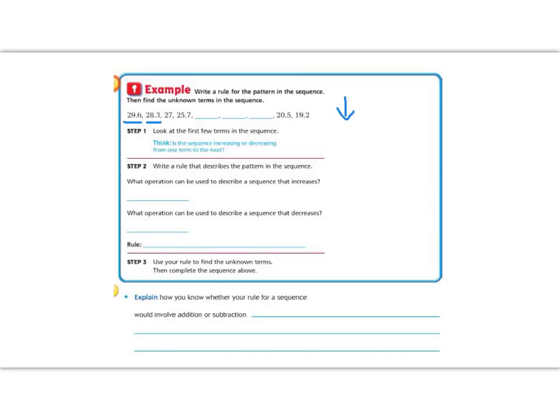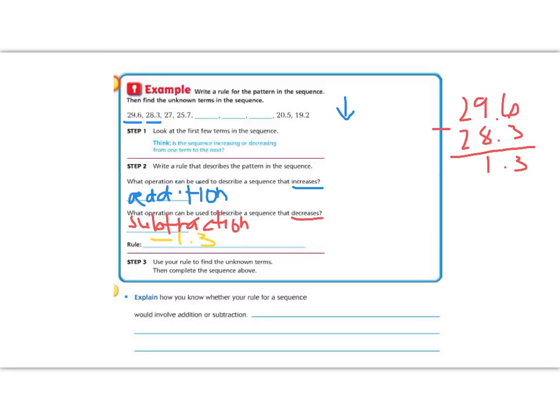Our next step says write a rule that describes the pattern. So we know if we are decreasing, that means subtraction. Now we need to figure out what is our rule. So if we take those two numbers, 29.6 and 28.3, in order to find out how they changed, we're going to subtract them. So 6 minus 3 is 3, and 9 minus 8 is 1, and 2 minus 2 is 0. So our rule was that we are going to subtract 1.3. Now our next step is to use that minus 1.3 to fill in the blanks above.